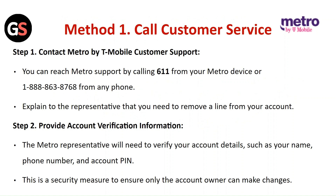Step one: contact Metro by T-Mobile customer support. You can reach Metro support by calling 611 from your Metro device, or from any phone. Explain to the representative that you need to remove a line from your account. Step two: provide account verification information. The Metro representative will need to verify your account details such as your name, phone number, and account PIN. This is a security measure to ensure only the account owner can make changes.